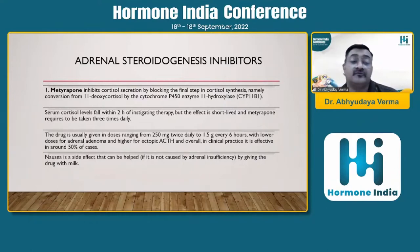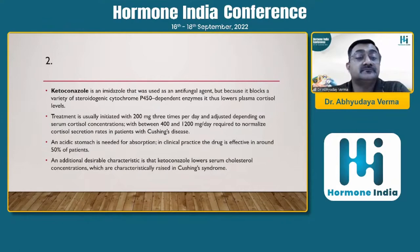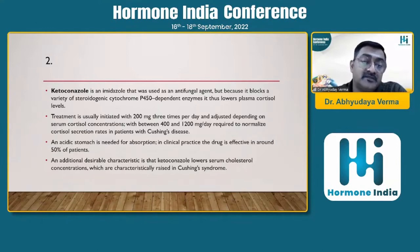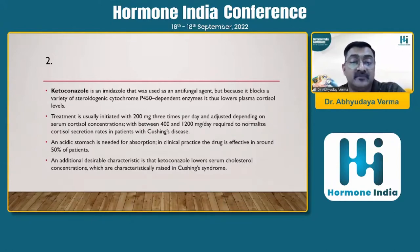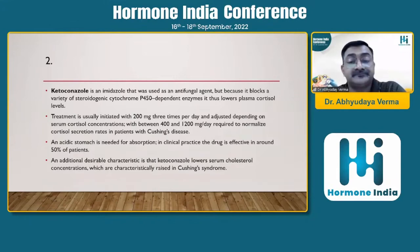Serum cortisol levels fall within 2 hours of starting metirapone therapy, but the effect is short-lived and it requires dosing 3 times daily. The usual dose ranges from 250 mg twice daily to up to 1.5 grams every 6 hours, with lower doses for adrenal adenoma and higher doses for ectopic ACTH. It is effective in about 50% of cases. The commonest side effect is nausea, which should be differentiated from nausea due to adrenal insufficiency. Ketoconazole — an imidazole used as an antifungal — blocks a variety of steroidogenesis cytochrome P450 dependent enzymes and lowers plasma cortisol levels. Treatment is usually initiated with 200 mg thrice daily and adjusted depending on serum cortisol levels.